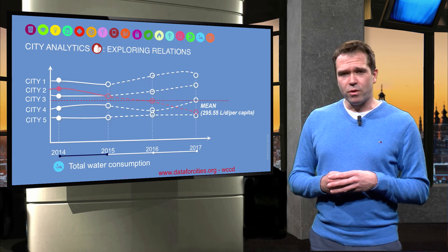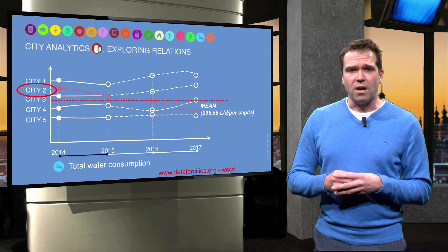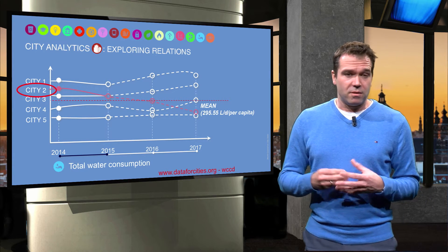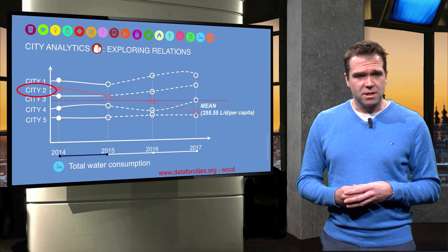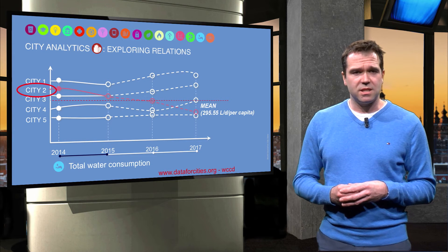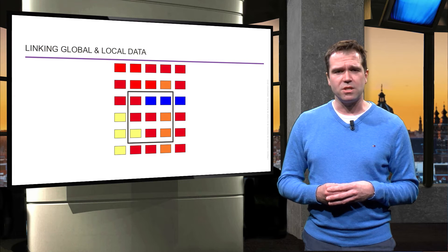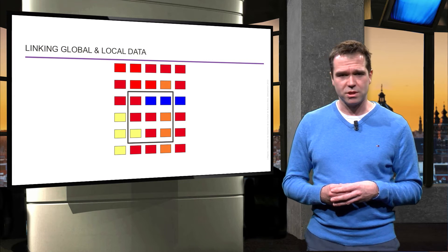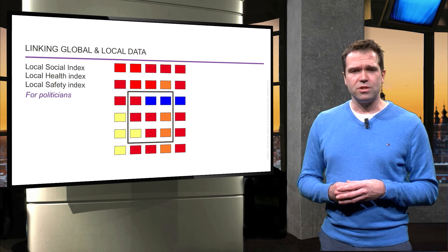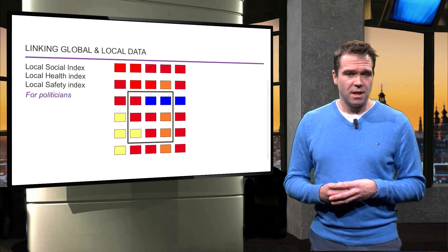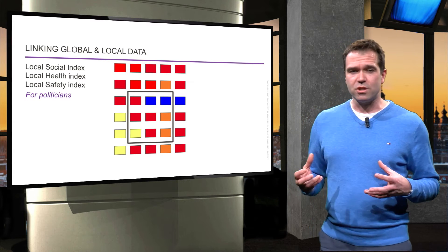Here you can see water consumption per day per capita over time. In 2014, a city actually set a target — a target that had already been met by other cities. At city level, with local data, there is also more specific information about neighbourhoods. The cloud of data is used to generate neighbourhood images on, for instance, safety, health and social issues.